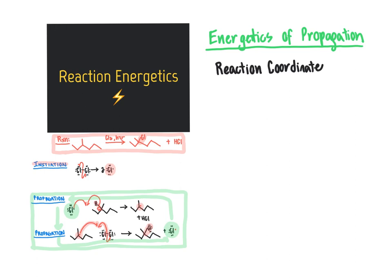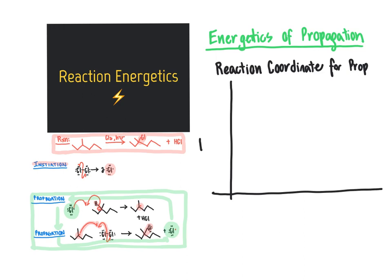Our reaction coordinate for this propagation is going to have energy on the y-axis — this will be true of any reaction coordinate we draw. The x-axis is going to show reaction progress, going from starting material to the final product, progressing from left to right and going from reactant to product. The x-axis is what we define as the reaction coordinate, showing the progress of the reaction as we plot the energy along the way.